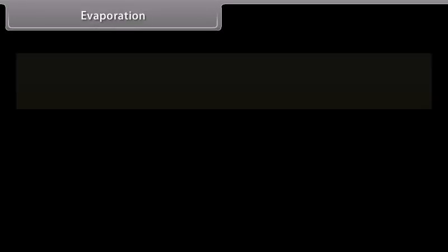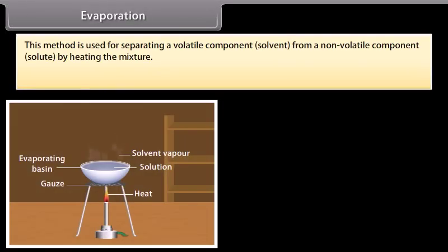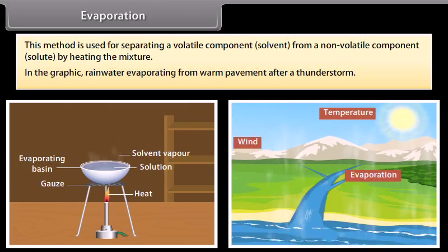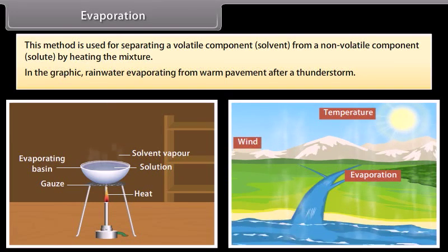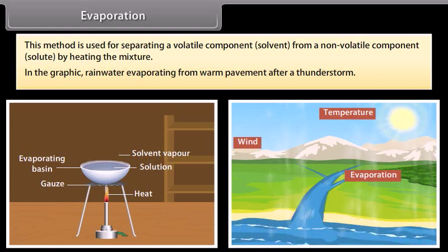Evaporation. This method is used for separating a volatile component (solvent) from a non-volatile component (solute) by heating the mixture. In the graphic, rainwater is shown evaporating from warm pavement after a thunderstorm.